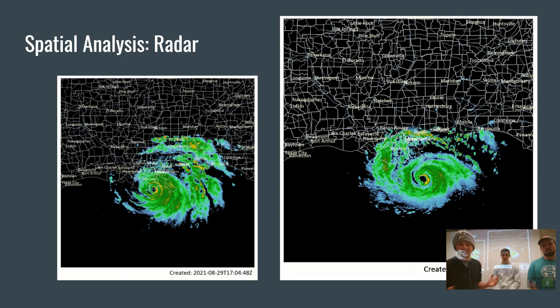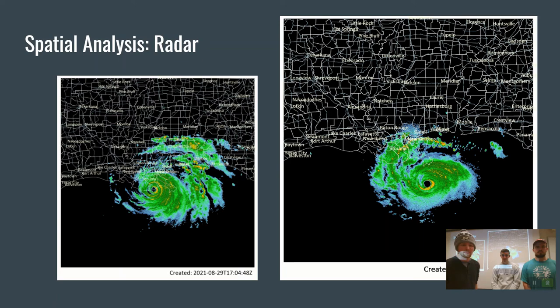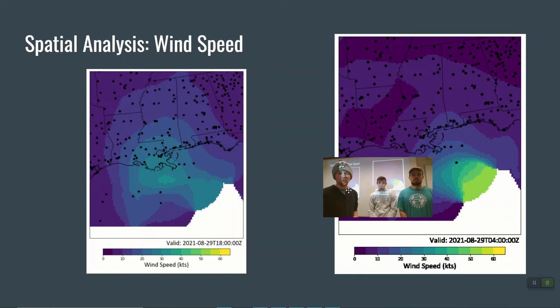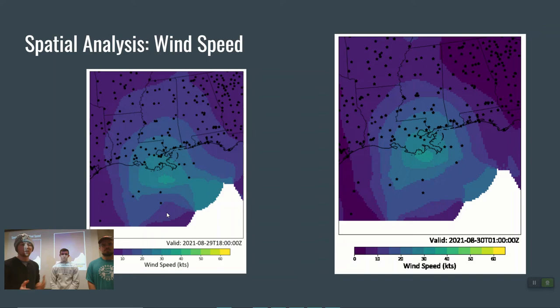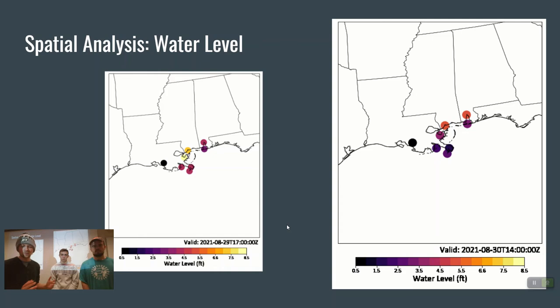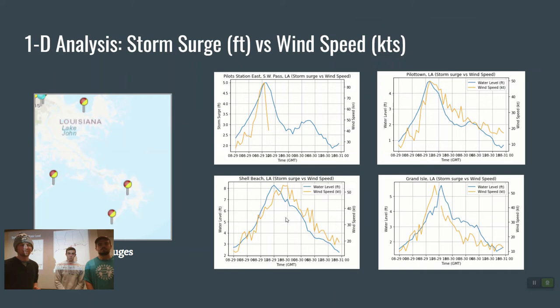To provide context, this radar plot shows the hurricane making landfall at around 17Z on August 29th. The wind speed is plotted over time, and around the time of landfall there were decently high winds coming onto the coast. At about that same time, several stations were reporting water levels above eight feet. Even from the spatial analysis, you can see a little bit of a correlation, which is even more apparent in the 1D analysis.